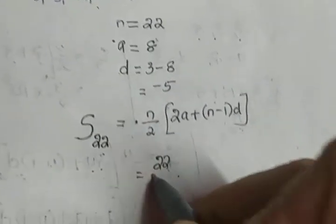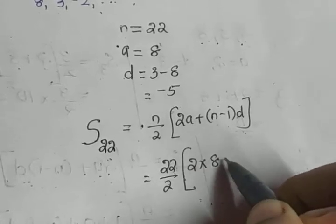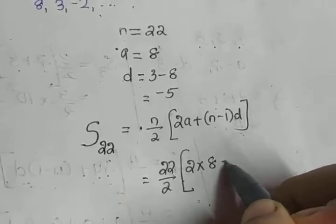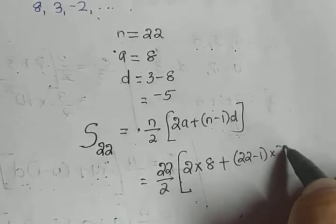That is equal to: n is 22, so 22/2 into [2 into A is 8, plus (n-1), that is 22-1, into D is -5].